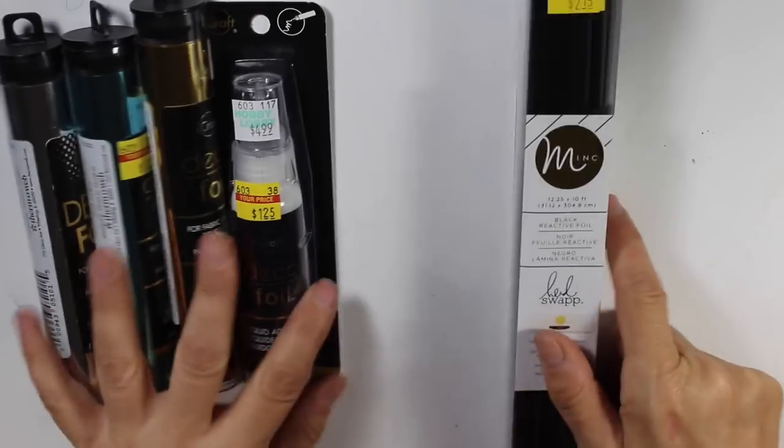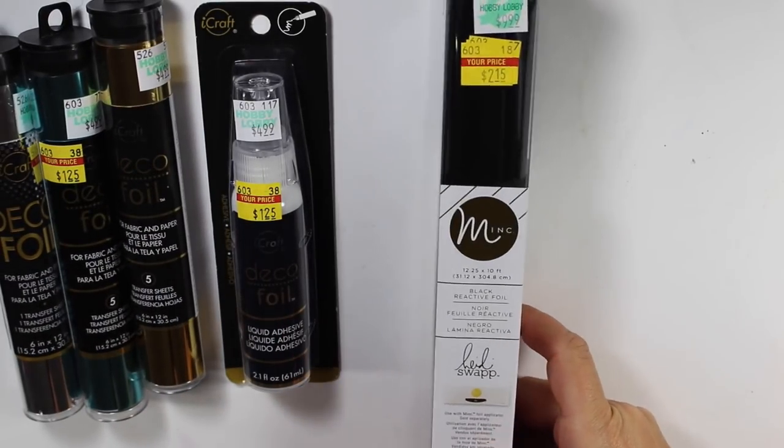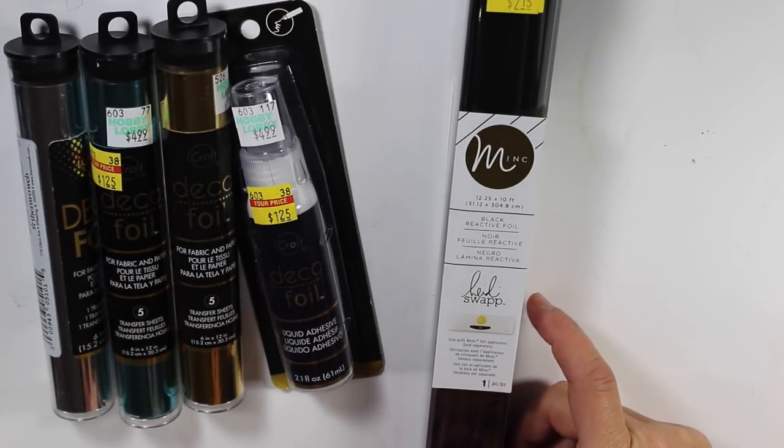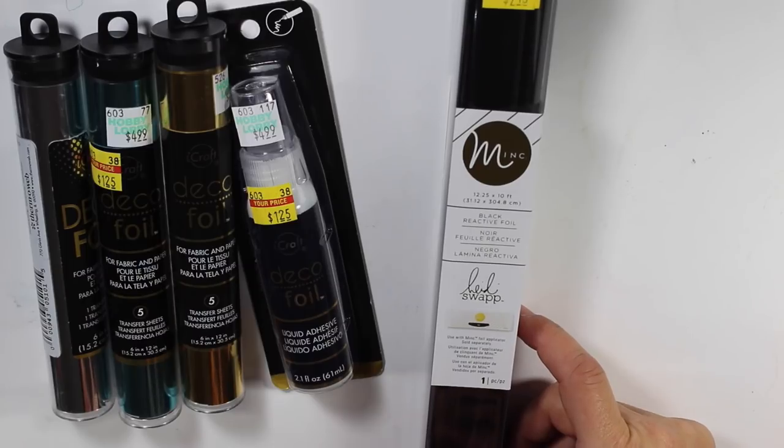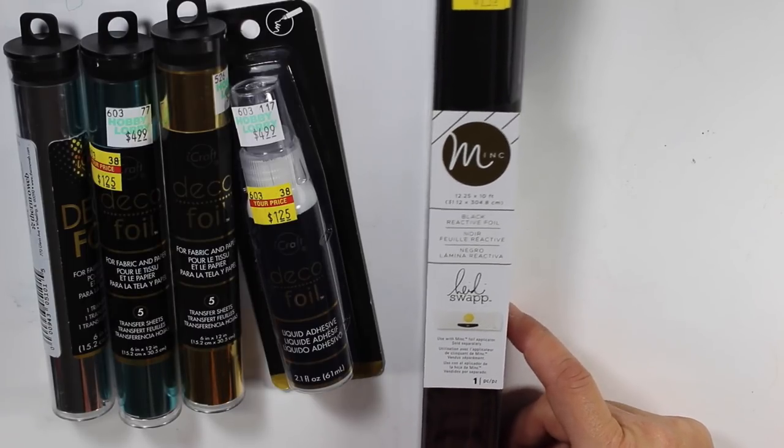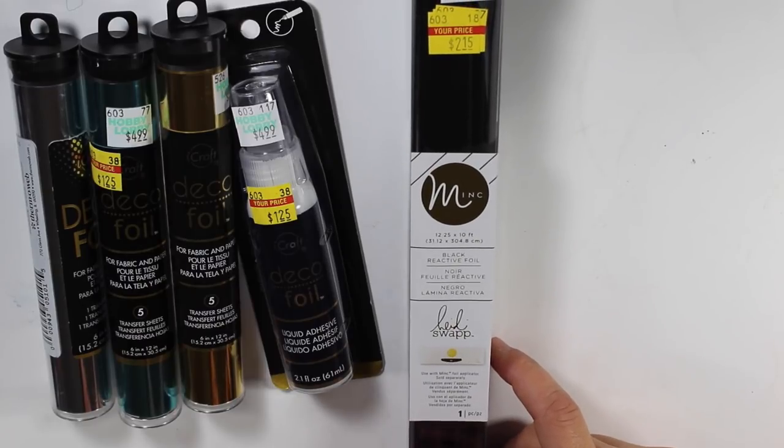And then I found this Heidi Swapp and this is black and I've never really seen black foil, although they did have the deco foil in black, but the Heidi Swapp for $2.15, there is a lot on here. This is 12.25 times 10 feet. So, I mean, you get a lot of foil on here.